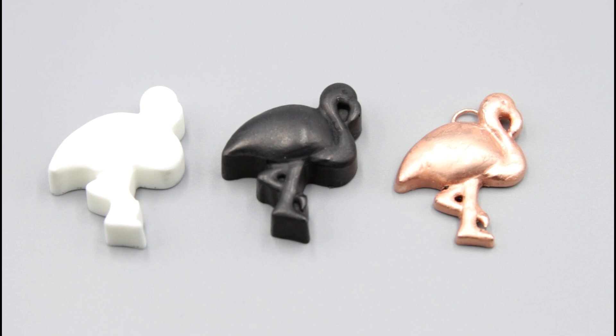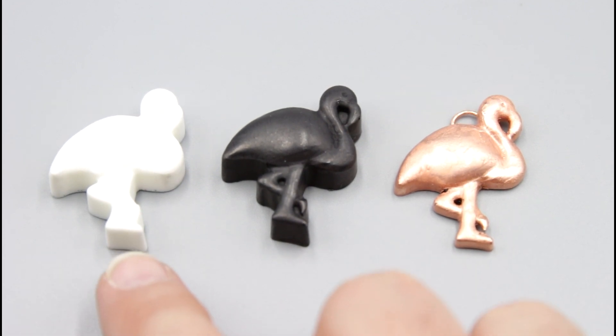And I'll be asked, is this something you can do with resin? The answer is absolutely. This is fast cast resin poured into a flamingo mold, covered with conductive paint, and then electroformed in the copper solution.